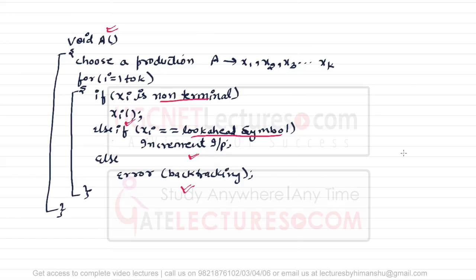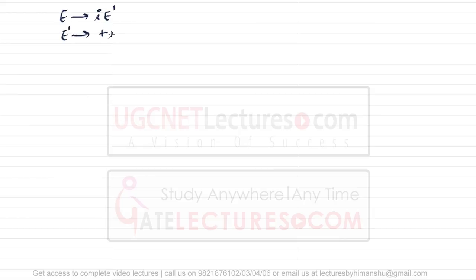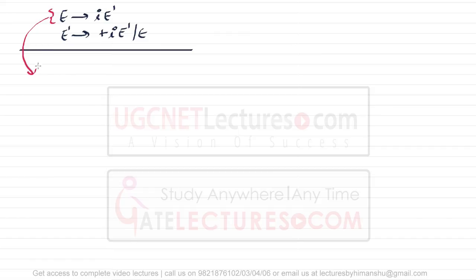We can write a recursive descent parser for a given grammar. Assuming we have the following grammar: E can derive i E-dash, and E-dash can derive plus i E-dash or epsilon. We got this grammar by converting a left recursive grammar to a right recursive grammar — we already saw this example in previous videos. For this grammar we have to write a recursive descent parser.